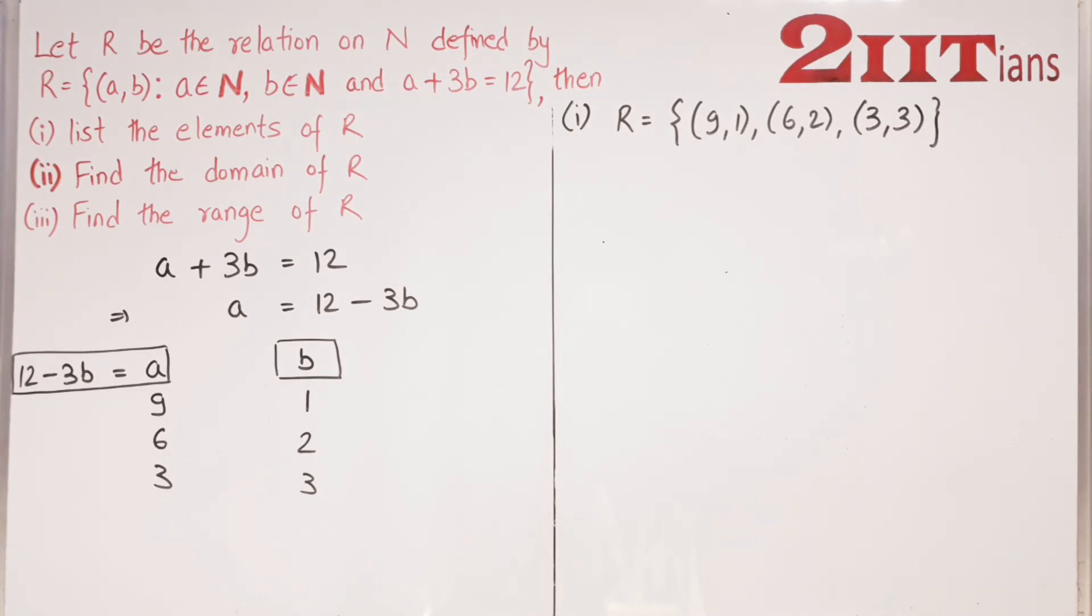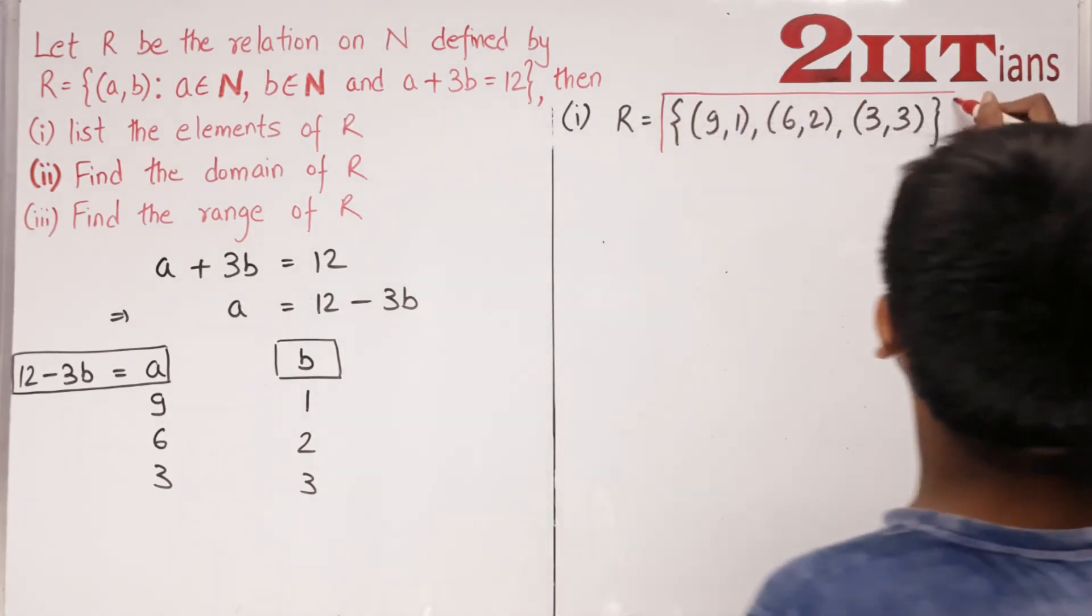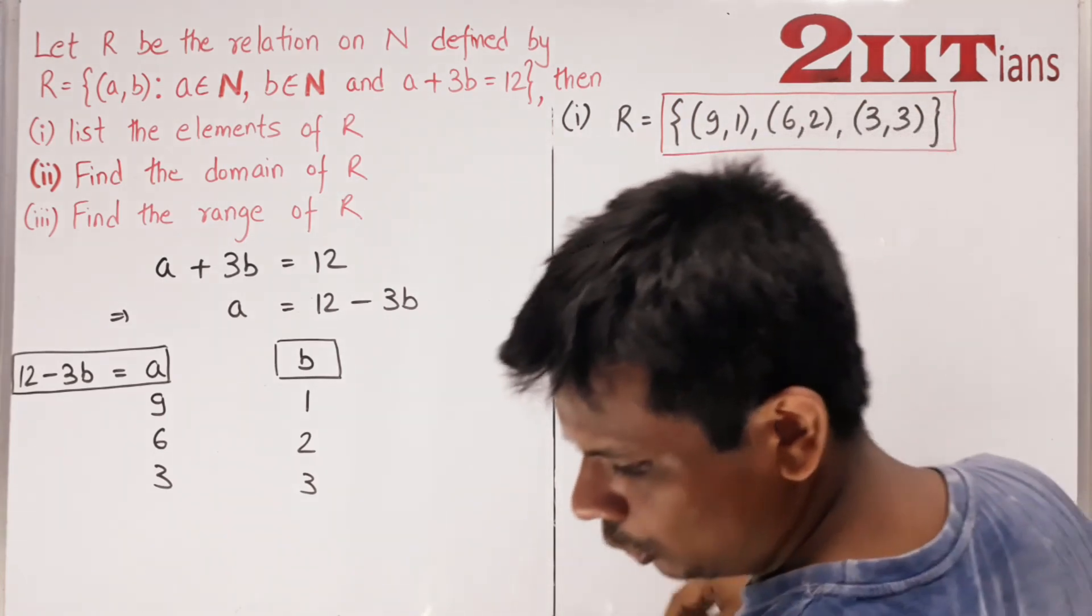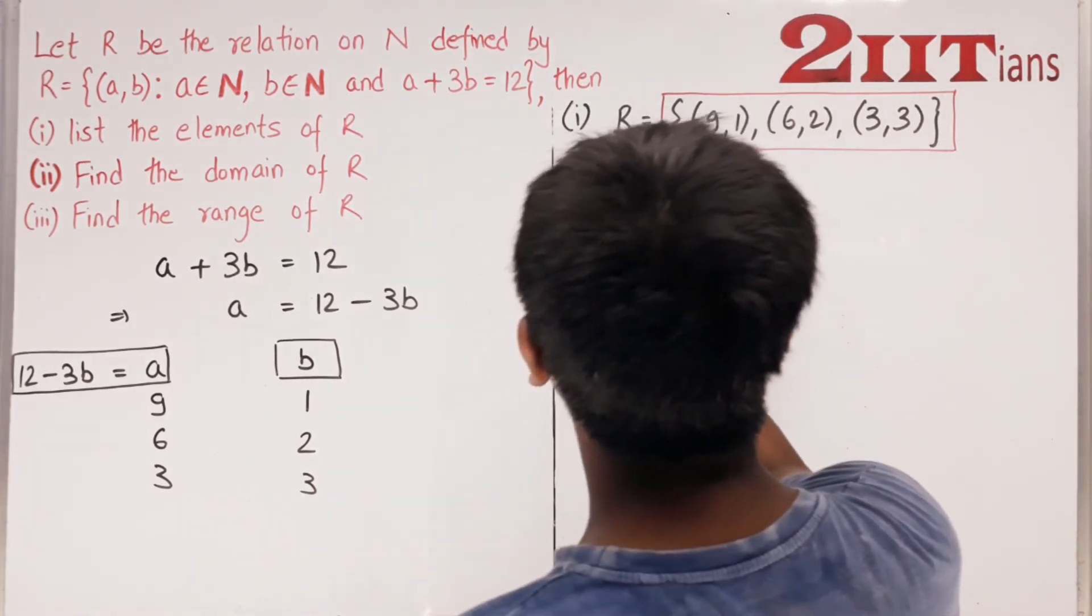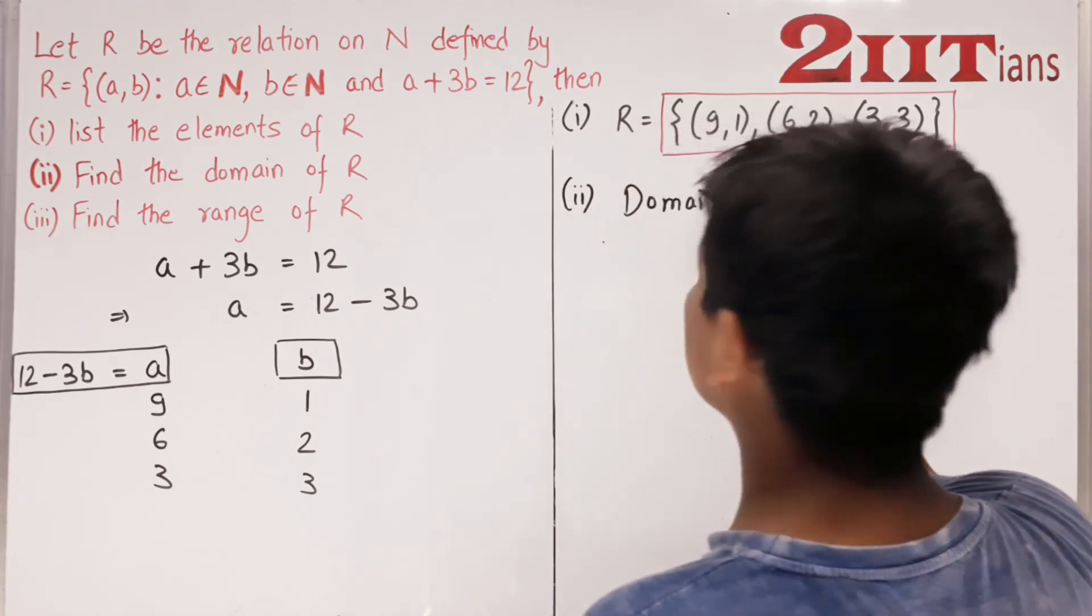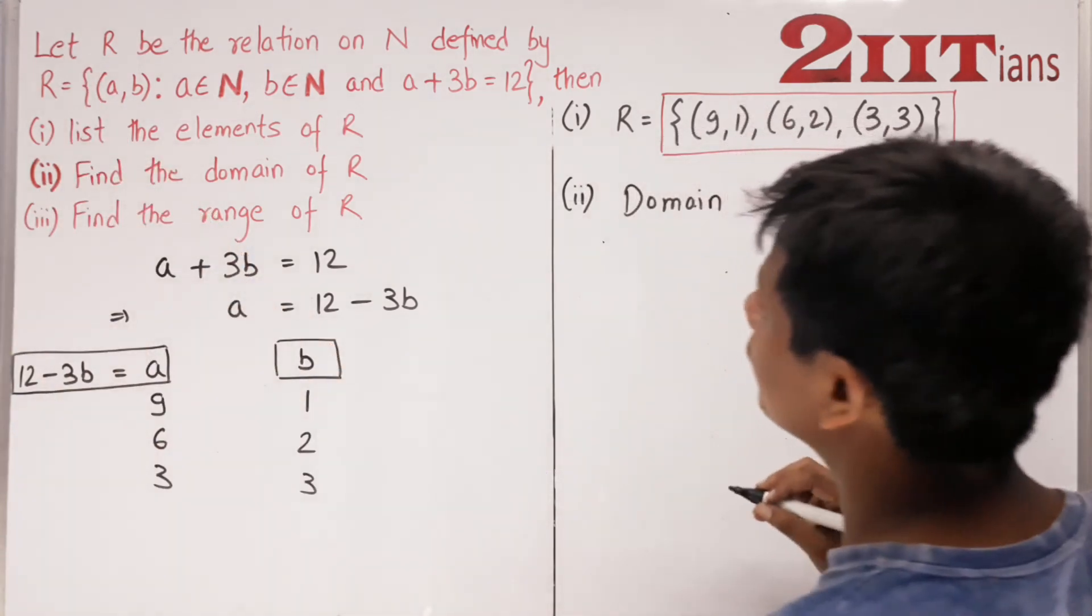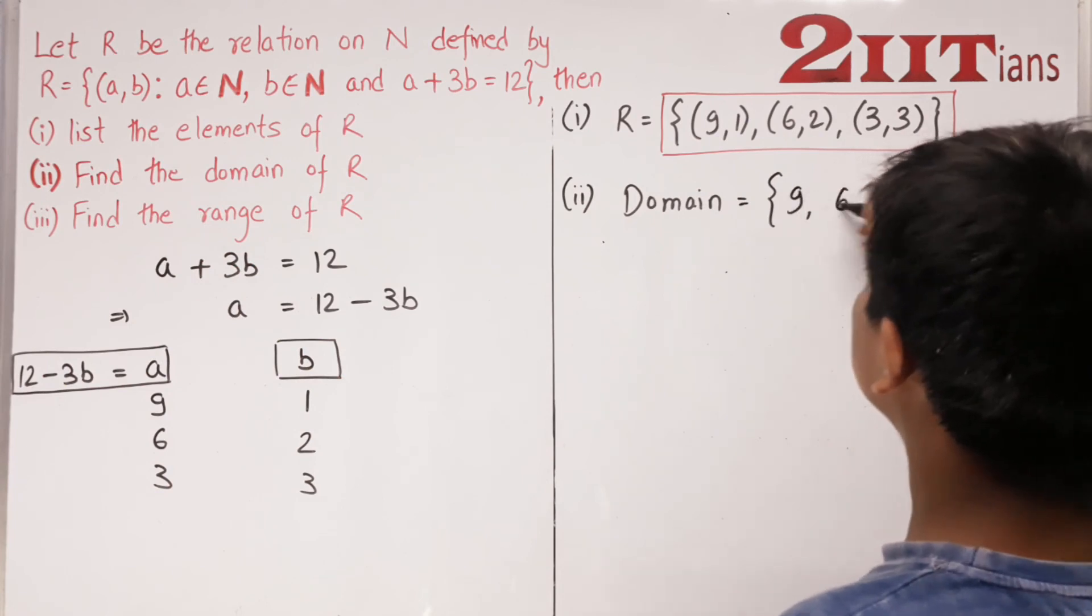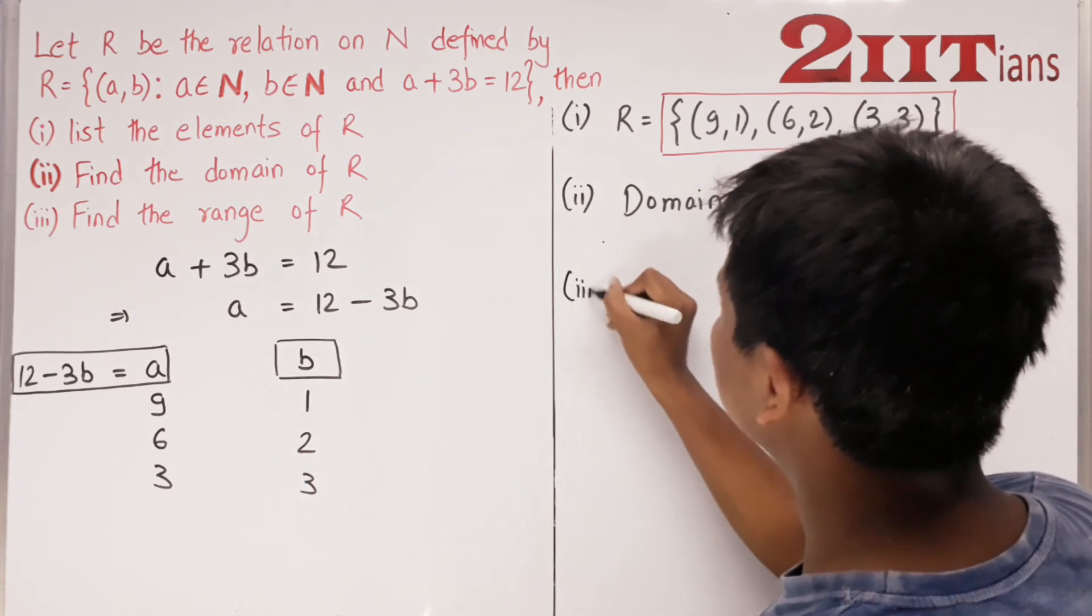Now we'll find the domain. The domain will be the first elements from each pair. For the function, it's 9, 6, 3. You can also write them in increasing order. Range...